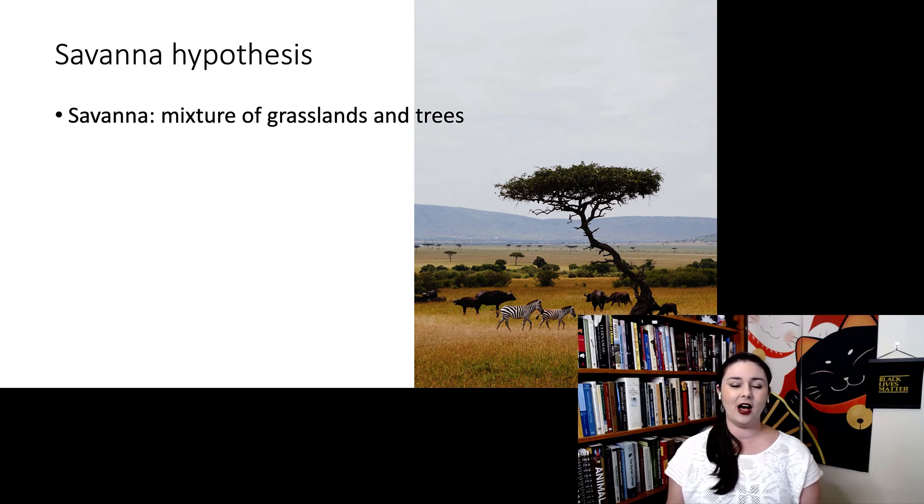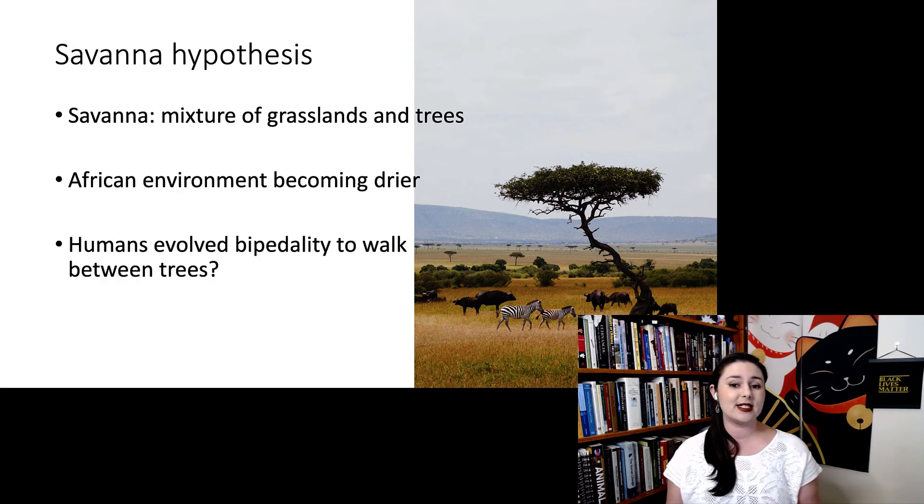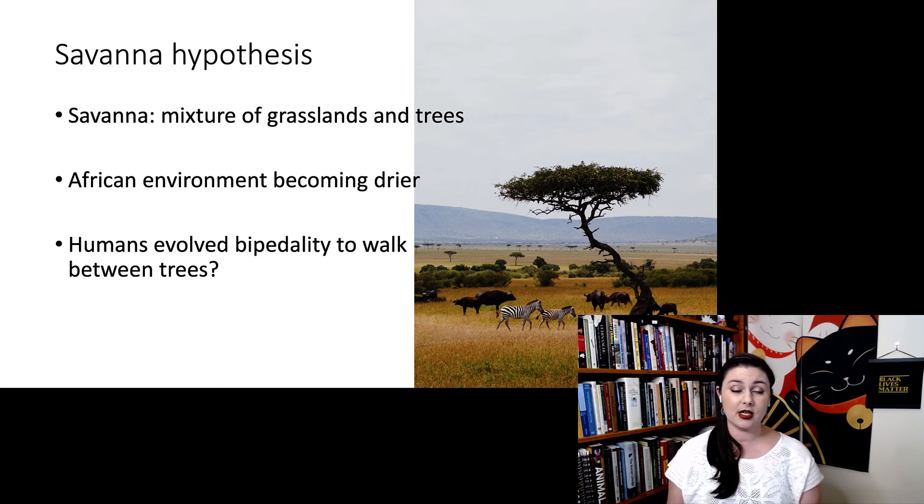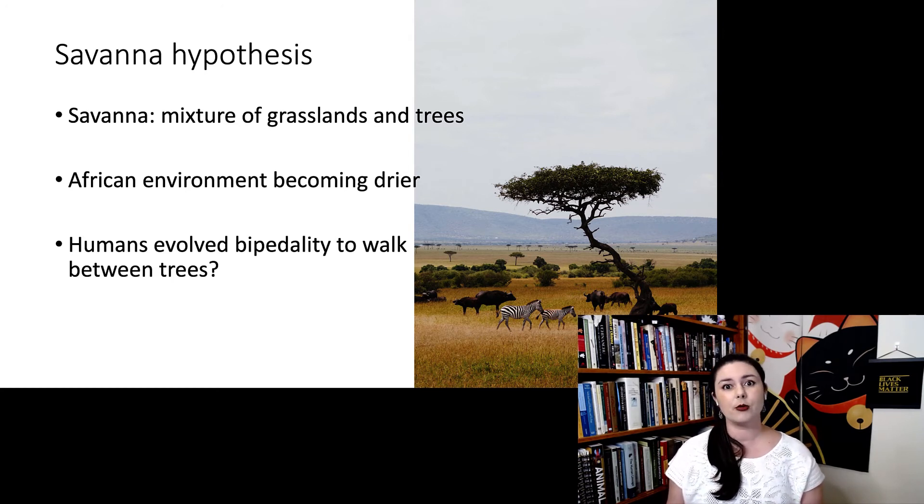So at the time the earliest hominins live, Africa was becoming a little bit drier. So this led to the idea that maybe our ancestors evolved bipedality as an adaptation to walk between these trees. Other people thought of different examples that would be helpful, like maybe we want to be able to see over the grass. You know, the grass is pretty short. Chimpanzees can see over it too. And maybe we just needed to carry things between different places. And because we are now exposed to the sun, we're not hidden in the rainforest, the ideas of thermoregulation come into play.